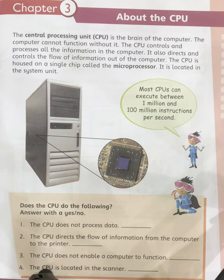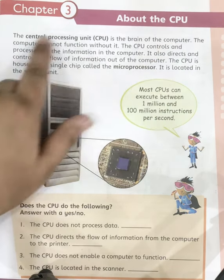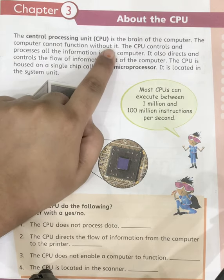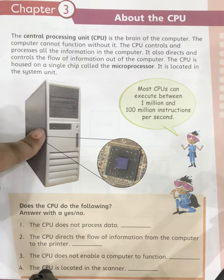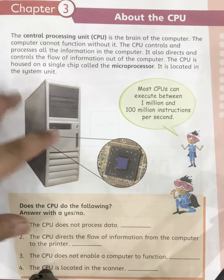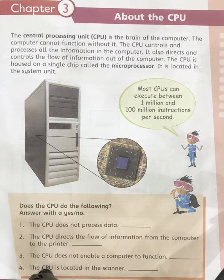The central processing unit is the brain of the computer — the computer cannot function without it. This is the most essential part for the function of the computer. If I detach the CPU from my desktop, the desktop cannot work. It is the same as us not being able to work without our brain. You cannot read without your brain, you cannot write without your brain, you cannot do anything without your brain.